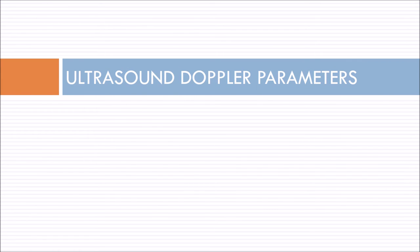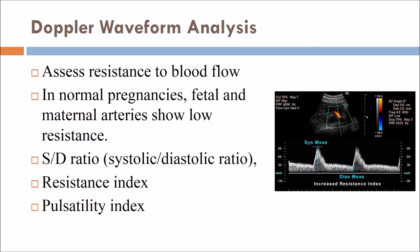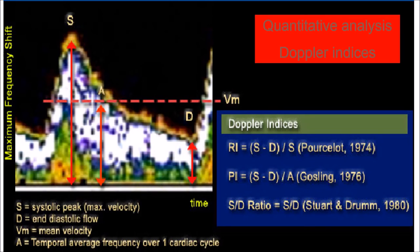The ultrasound Doppler parameter uses the Doppler effect — a change in apparent frequency due to relative motion between the source and the observer, in this case the Doppler probe and red blood cells. When a sound wave strikes a moving target, the frequency of the reflected wave is proportionate to the velocity and direction of the moving object. It is used to determine the value and rate of blood flow through maternal vessels. Doppler waveform analysis assesses resistance to blood flow. In normal pregnancies, fetal and maternal arteries show low resistance. The three indices used are: systolic-to-diastolic ratio, resistance index, and pulsatility index.